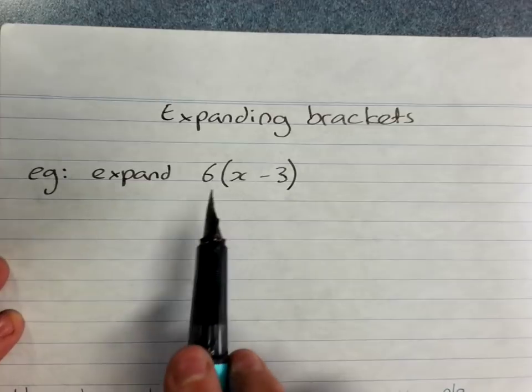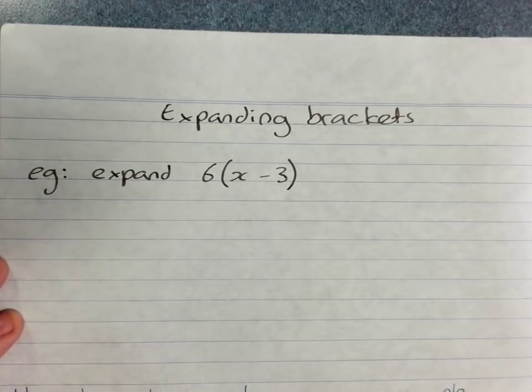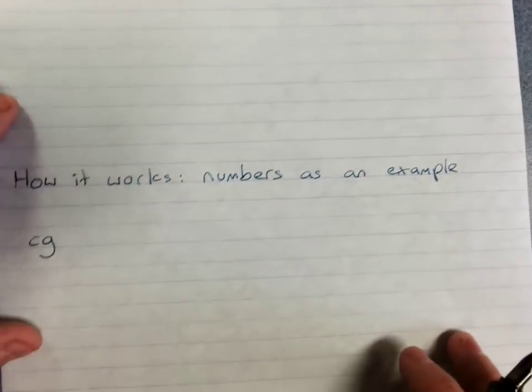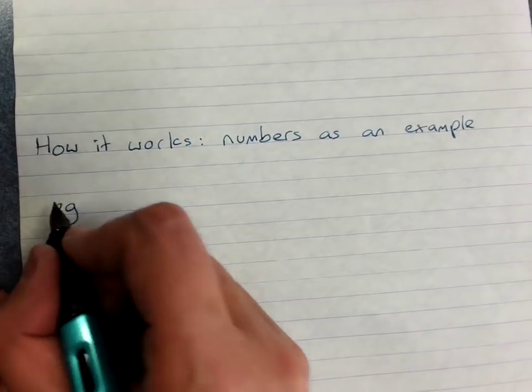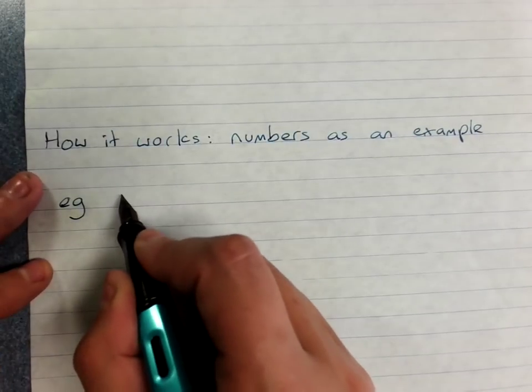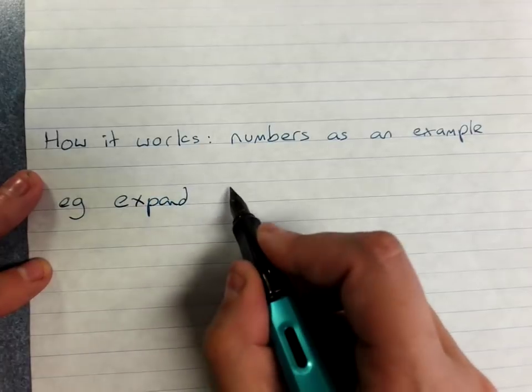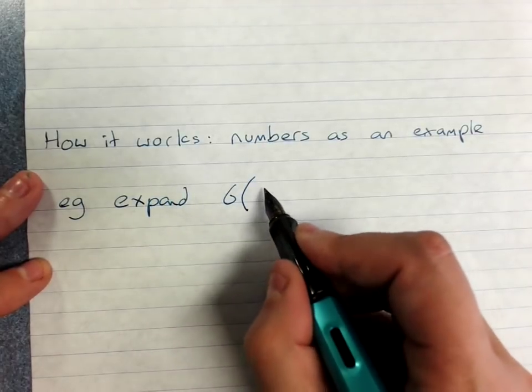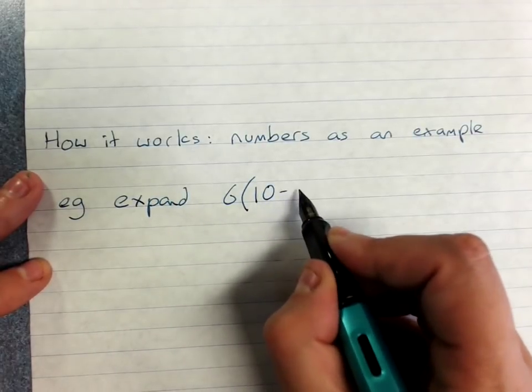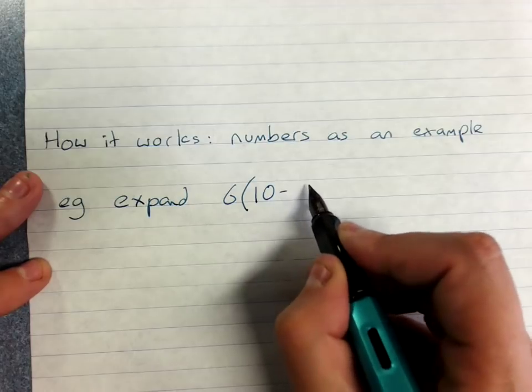Now I'm actually going to come back to this one once we've seen how this sort of question works, and we're going to look at it with just numbers as an example. So for example, expand 6 outside of 10 minus 7.